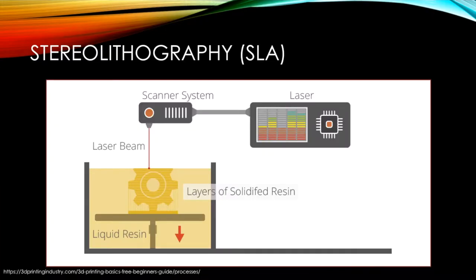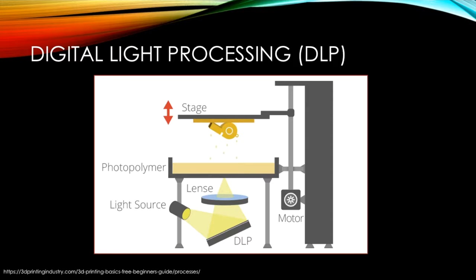Stereolithography uses a laser to form the part from photopolymer resin as a platform moves down. Digital light processing uses photopolymers as well, but instead uses a light source to solidify single layers at a time as a platform moves up.